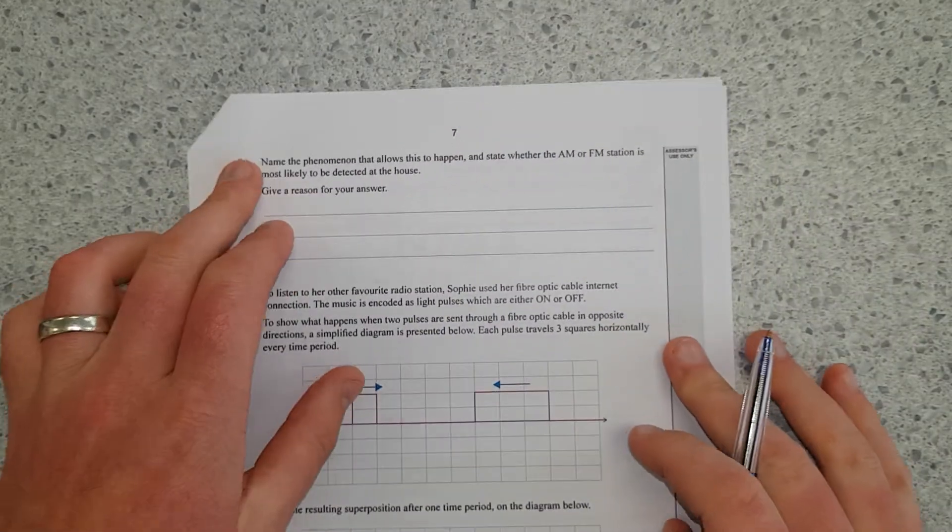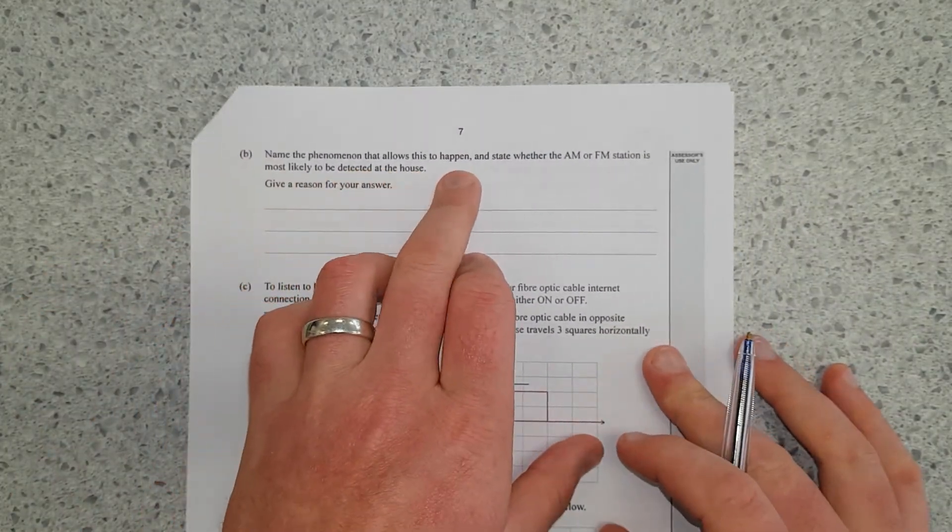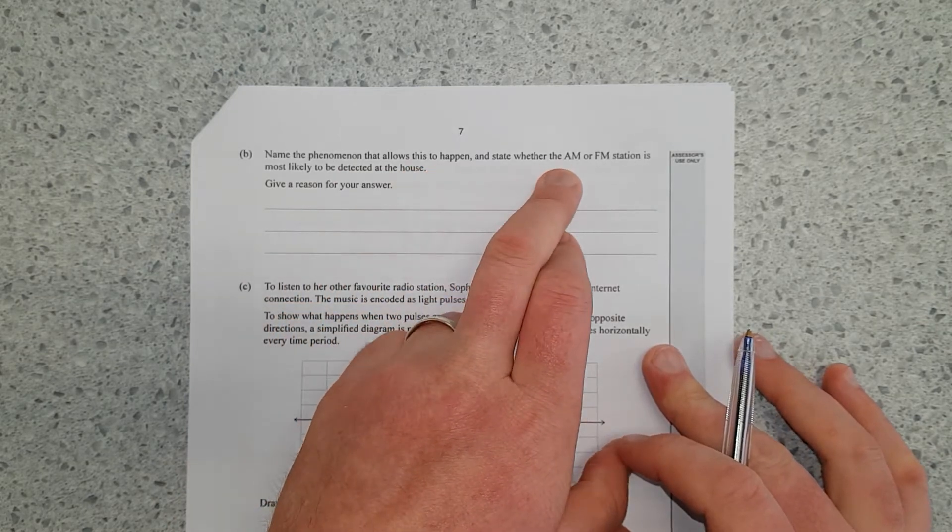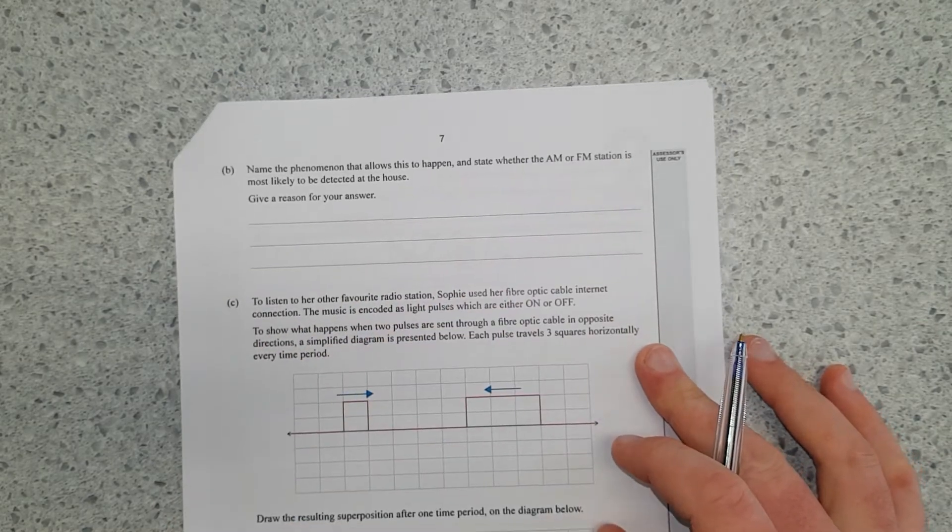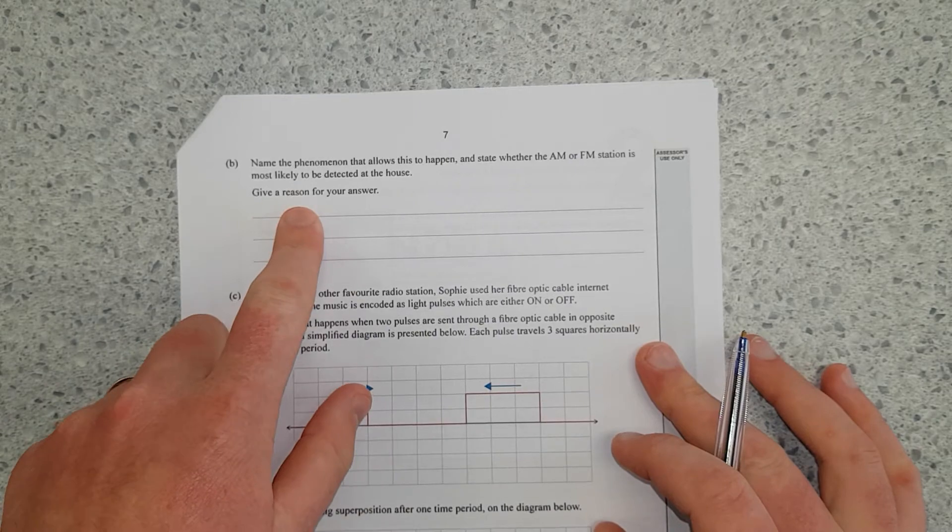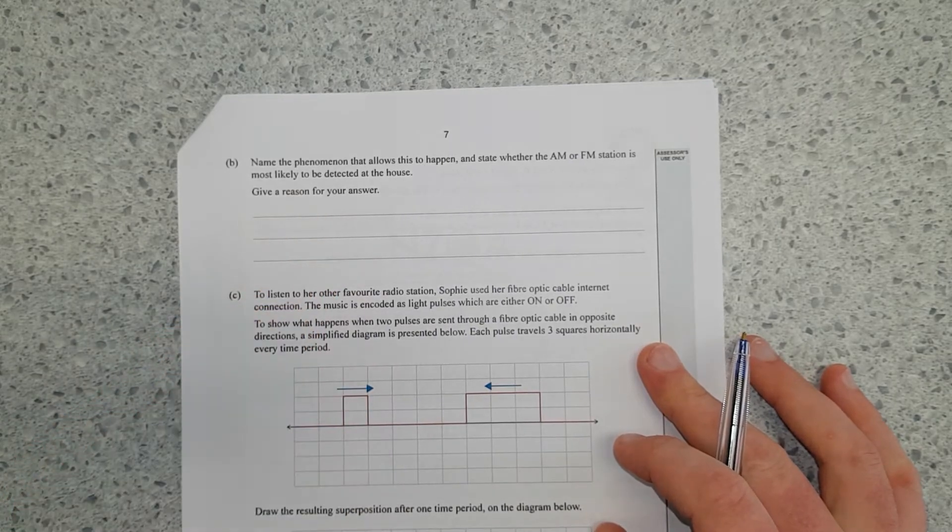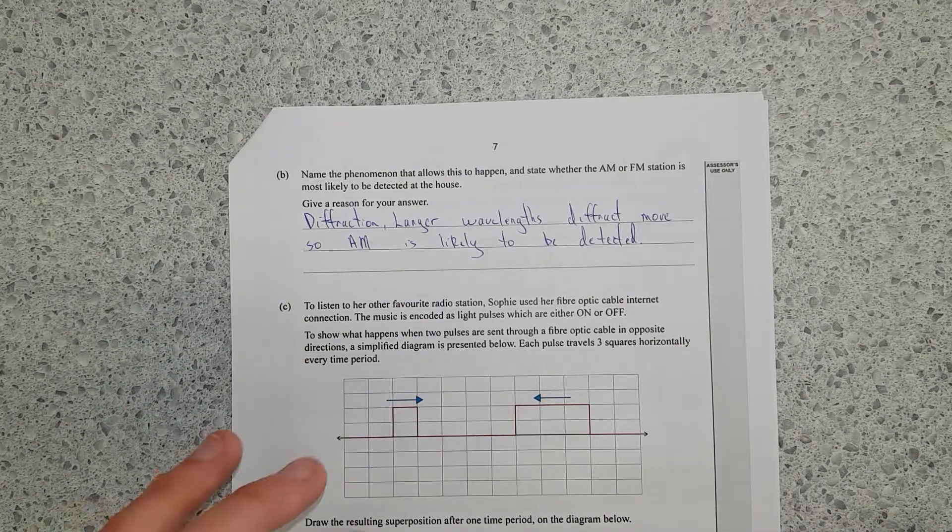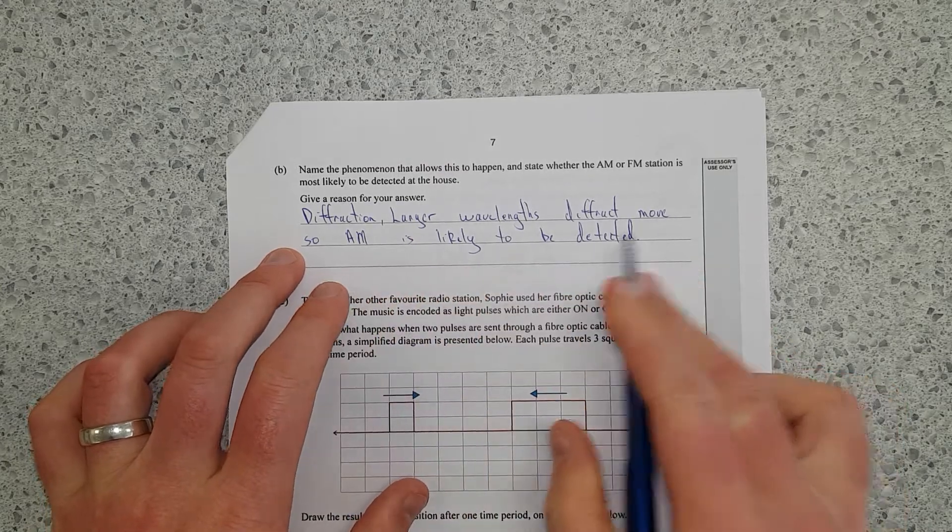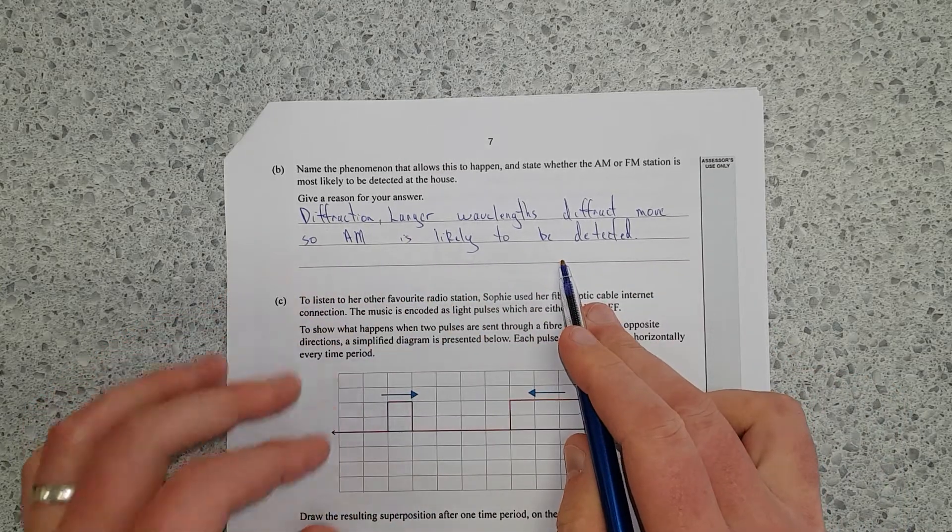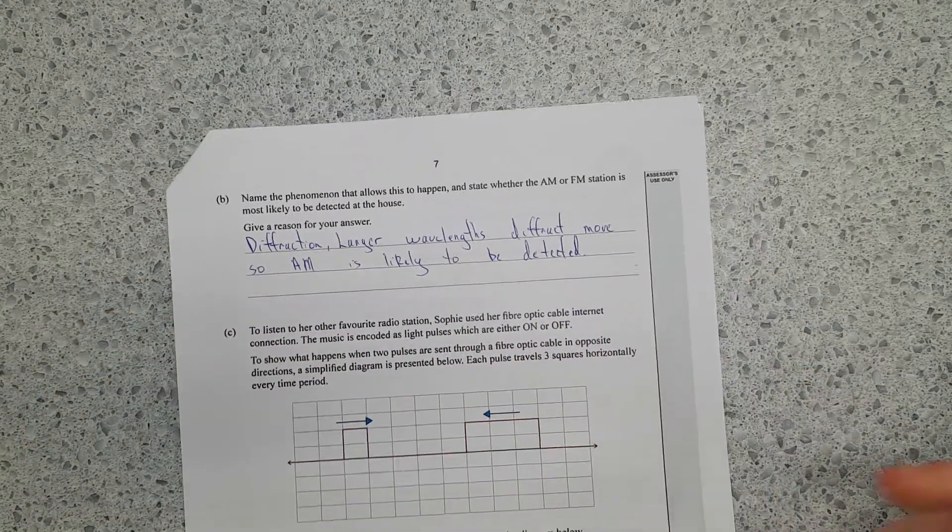Name the phenomenon that allows this to happen. State whether the AM or FM station is most likely detected at the home. Give a reason for your answer. So I'll just write the answer. I said diffraction, larger wavelengths diffract more, so AM is likely to be detected. I'll just double-check this.